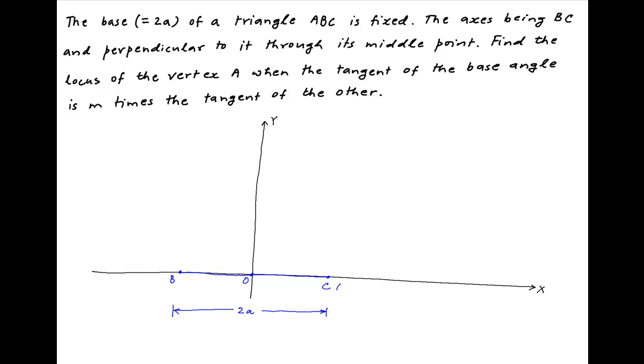Since the distance BC is given to be equal to 2A, the coordinates of C and B are respectively (A, 0) and (-A, 0).